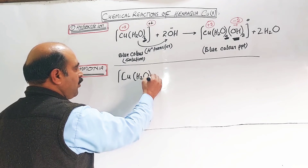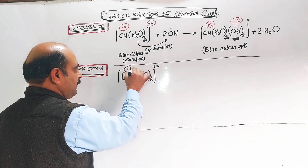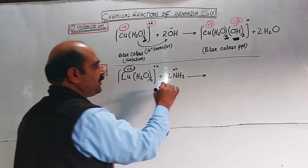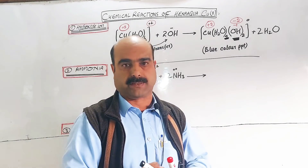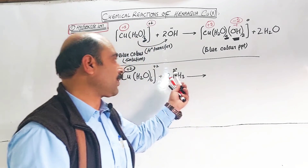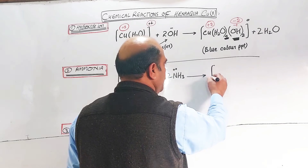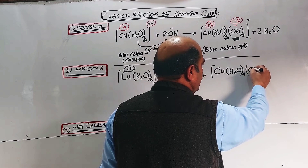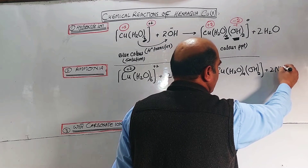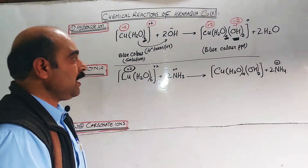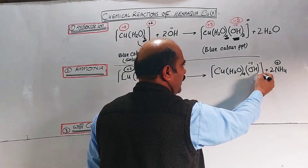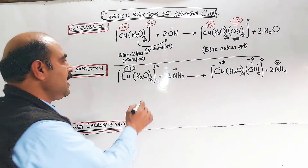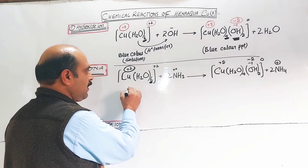Second reaction: Cu(H₂O)₆²⁺ plus two charge with ammonia NH₃. Ammonia has a lone pair of electrons and is a proton acceptor — a base according to Lowry-Bronsted. The product is Cu(H₂O)₄(OH)₂ plus two moles of ammonium ions. Note the change: hydroxide ion is minus one, times two gives minus two, plus two gives net charge zero.